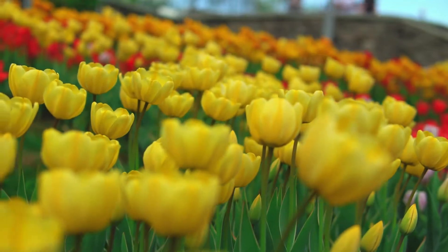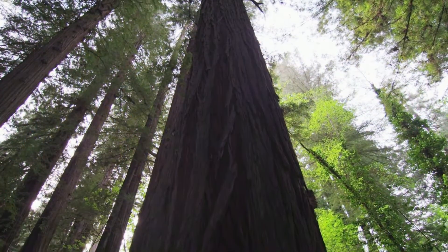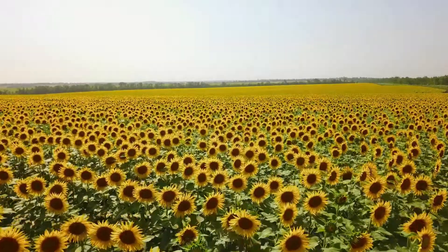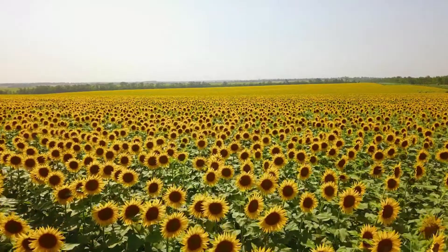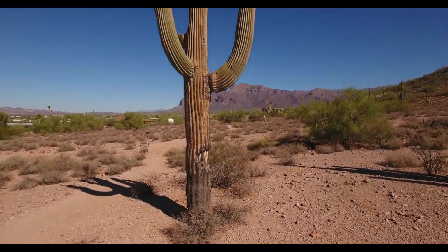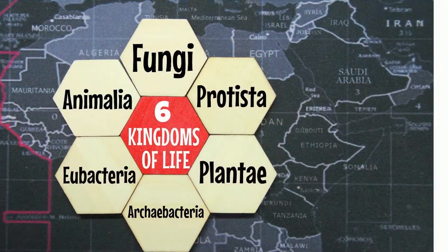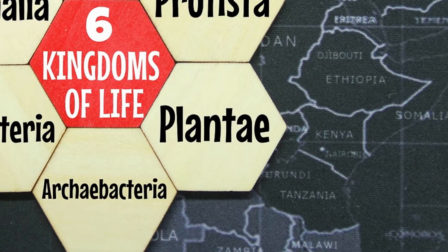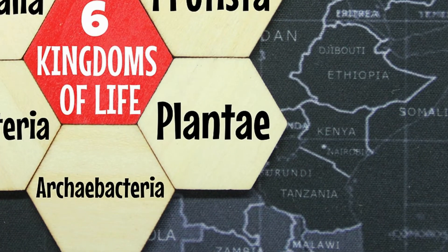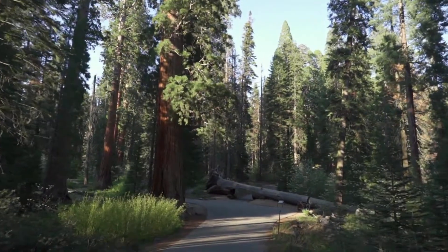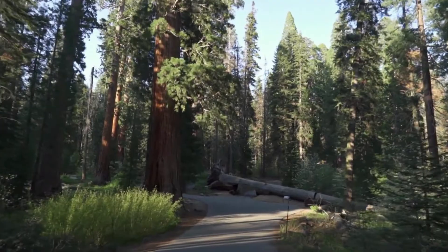Plants come in all kinds of shapes and sizes. Plants belong in the plant kingdom, also called Kingdom Plantae. Let's take a look at some common characteristics of this kingdom.